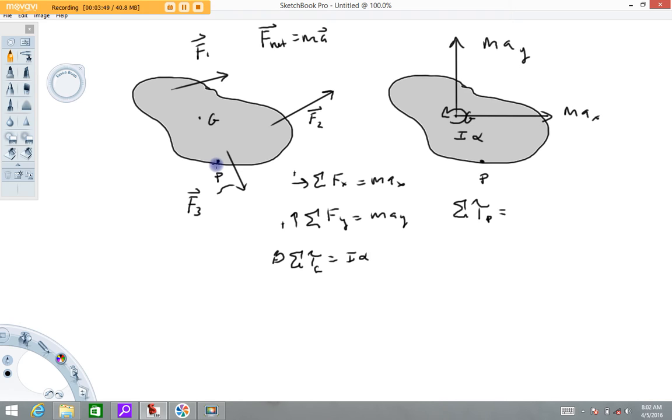On the right-hand side, the I-alpha term is a rotational term. It still needs to be there. So we've got I-alpha where that I is about G, the center of gravity of the object. However, that's not the only torque on the right-hand side. This ma here, I like to call these inertial terms, is acting along this line. It's equivalent to force because force equals mass times acceleration. So the inertia of that object also creates a torque about P.